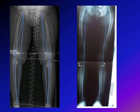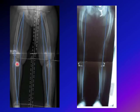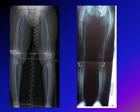Here is another example of hemiepiphysiodesis in one of my patients. She had Genu Varum originating from the proximal tibia. We stopped the growth of the outer part, allowing the inner part to grow, which pushed the leg outward and corrected the deformity. This is the picture at the end of her treatment after full correction. Once fully corrected, we took her back and removed the hardware.